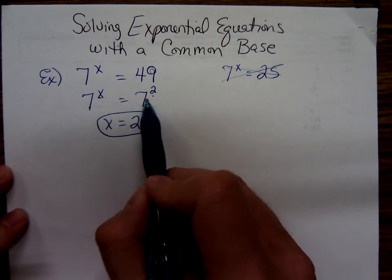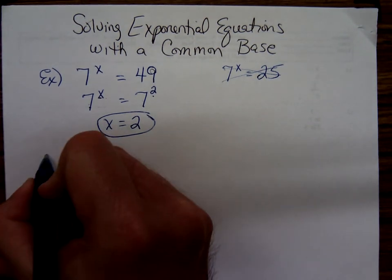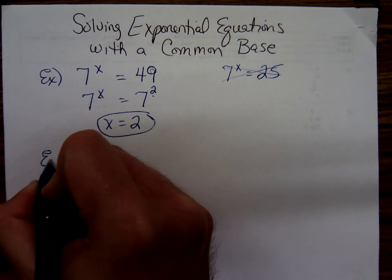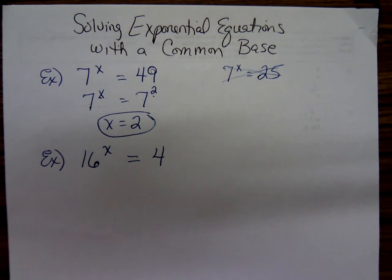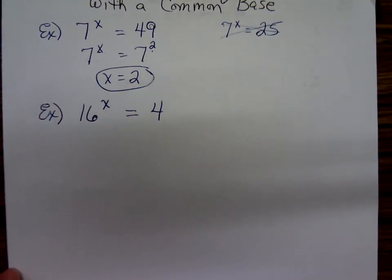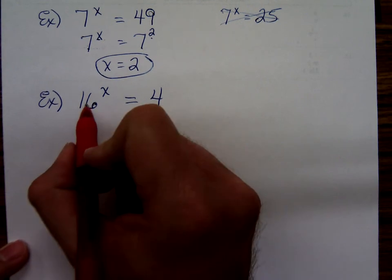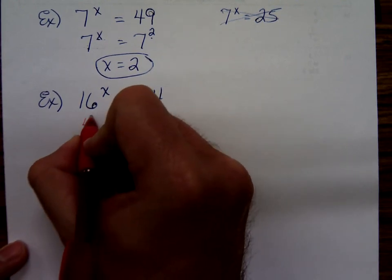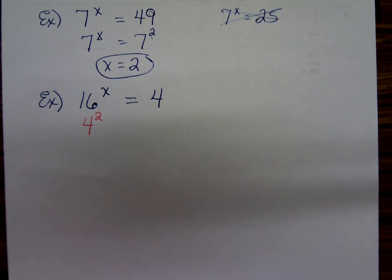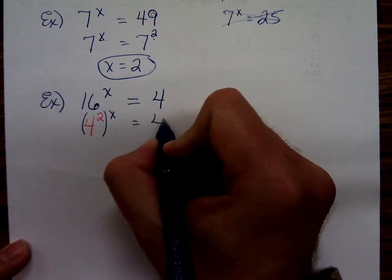Now, you might wonder, why did I write it like this? It won't always be so obvious. Let's solve 16 to the x power equals 4. Well, looking at the larger number, I'm going to think, can I write 16 as 4 to a power? The answer is yes. I could write 16 as 4 squared. So, we have 4 squared to the x equals 4.